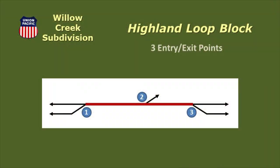The fourth block, known as Highland Loop Block, presents a special challenge in that there are three entry-exit points. While Circuitron has controllers that can handle this situation, the signaling is complicated in that one of these points is the entrance to Waverly Yard and requires additional signaling to control trains entering and exiting the yard.